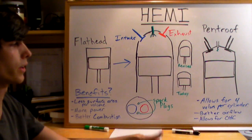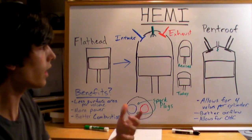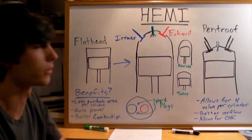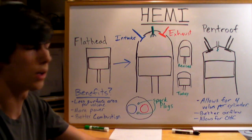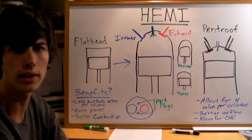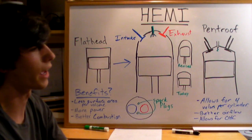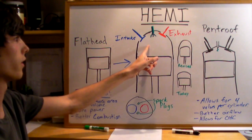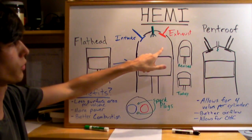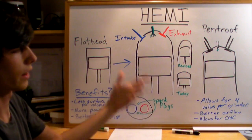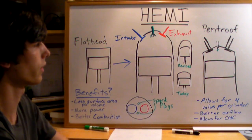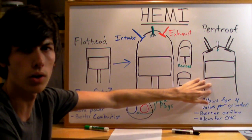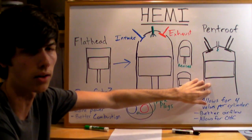With four valves per cylinder, you're going to have better airflow. Another benefit of the pent roof design is that you can have overhead cams — I've got an additional video explaining the differences between dual overhead cams, overhead cams, and overhead valves, or push rod design, which this Hemi engine will use. It'll use a push rod, which means more inertia to overcome. There are problems with that. So this pent roof design is really the best design, and it's pretty much what all cars are going to if they're not there already.